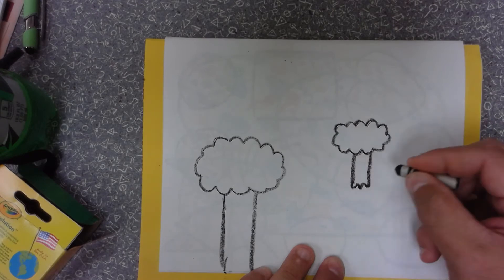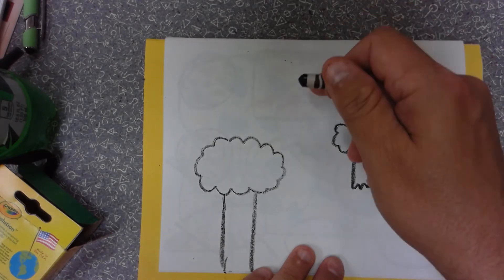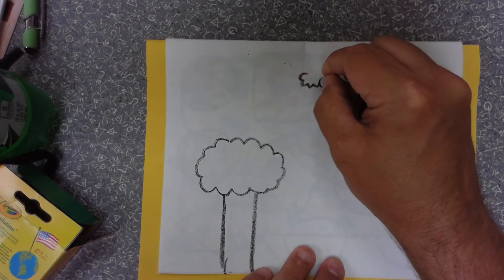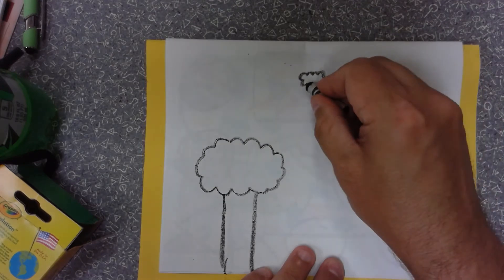You can do a zigzag if you want, like there's grass, or you can just put a straight line. The next thing we're going to do is one in the background, almost toward the top but not all the way up. You're going to make a tiny tree—make the top even smaller and then the bottom even smaller.